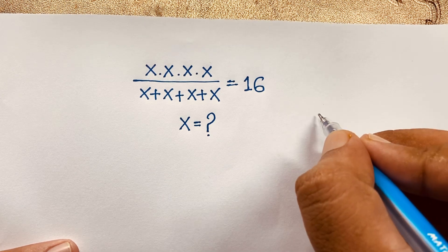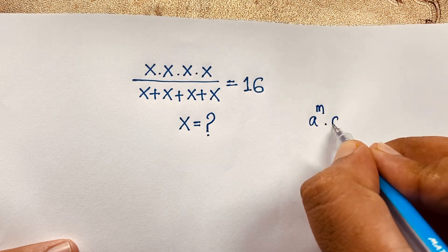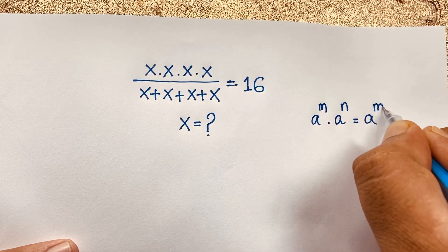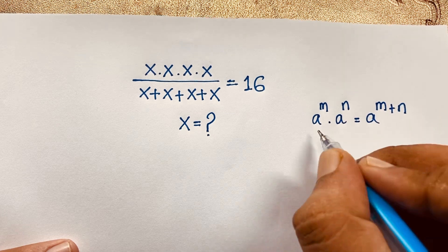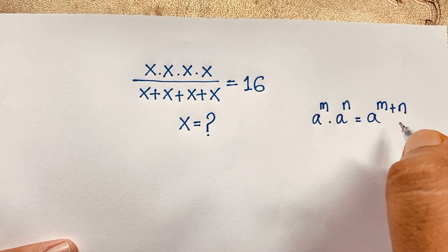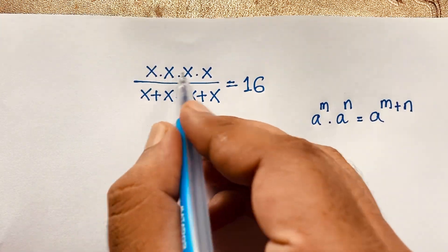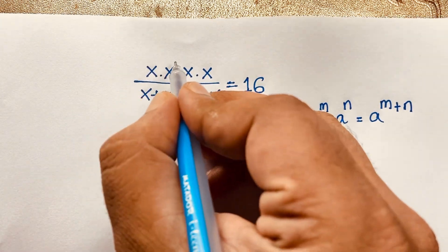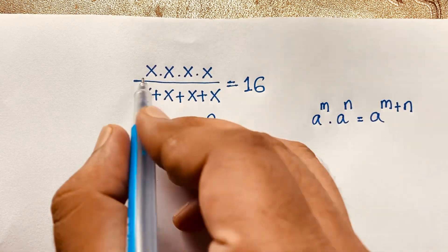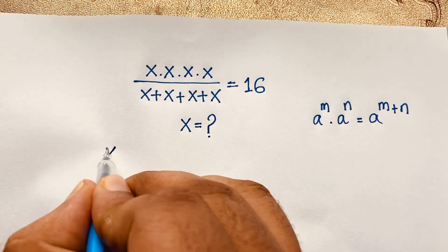One of the exponential formulas: a to the power m times a to the power n equals a to the power m plus n, when the base is the same, so we add the exponents. According to this formula, we can see the base is the same here. Each exponent is 1, so x times x times x times x times x will be x to the power 4.